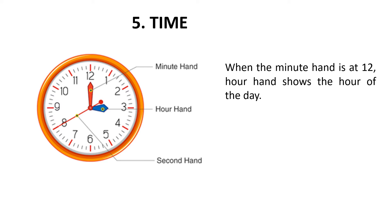So if the minute hand is at number one, that means five minutes have passed. It will take ten minutes to reach number two, and fifteen minutes to reach number three. If the minute hand is at 12, it shows the hour of the day. Here the minute hand is at 12, that means zero minutes. Now we look at the hour hand — the hour hand is at three, so the time is three o'clock.